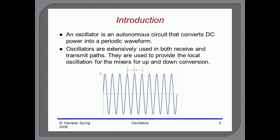Introduction: An oscillator is an autonomous circuit that converts DC power into a periodic waveform or AC supply. Oscillators are extensively used in both receive and transmit paths, and they are used to provide the local oscillation for the mixers for up and down conversion.